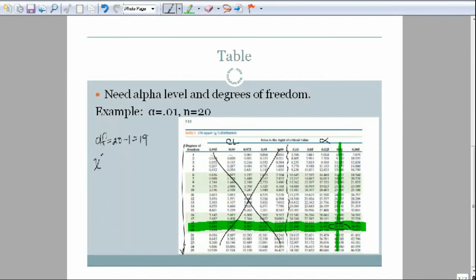So our chi-squared critical value is 36.191, and that's what we would use in our problem from the table.